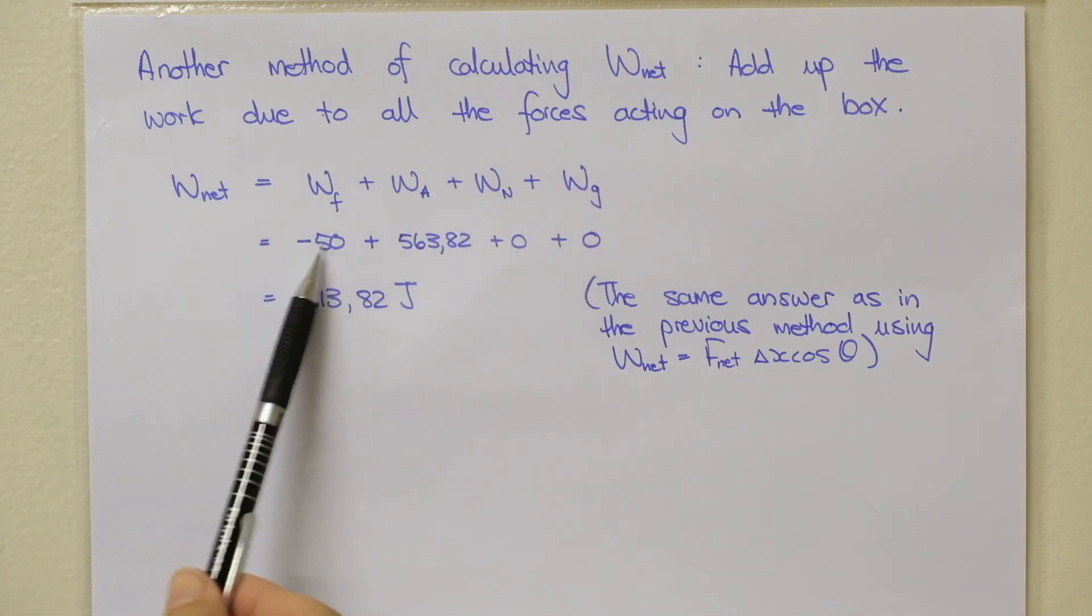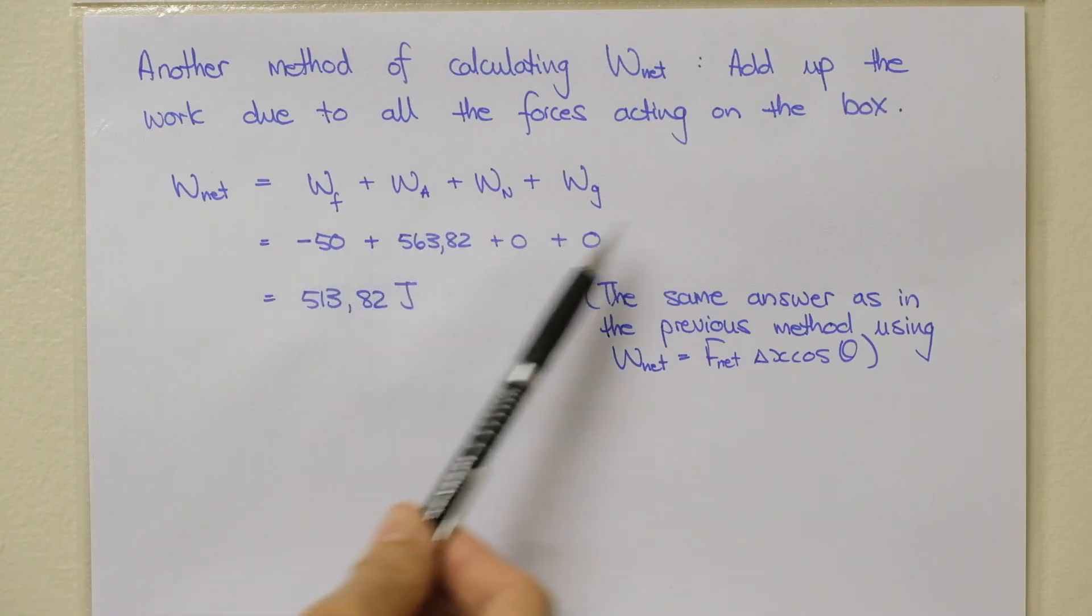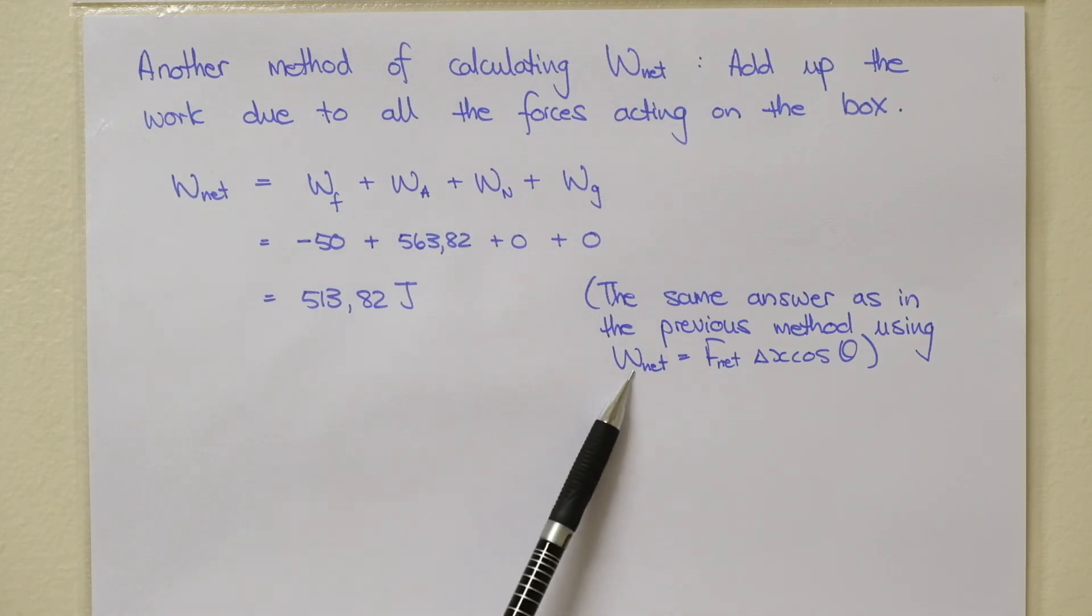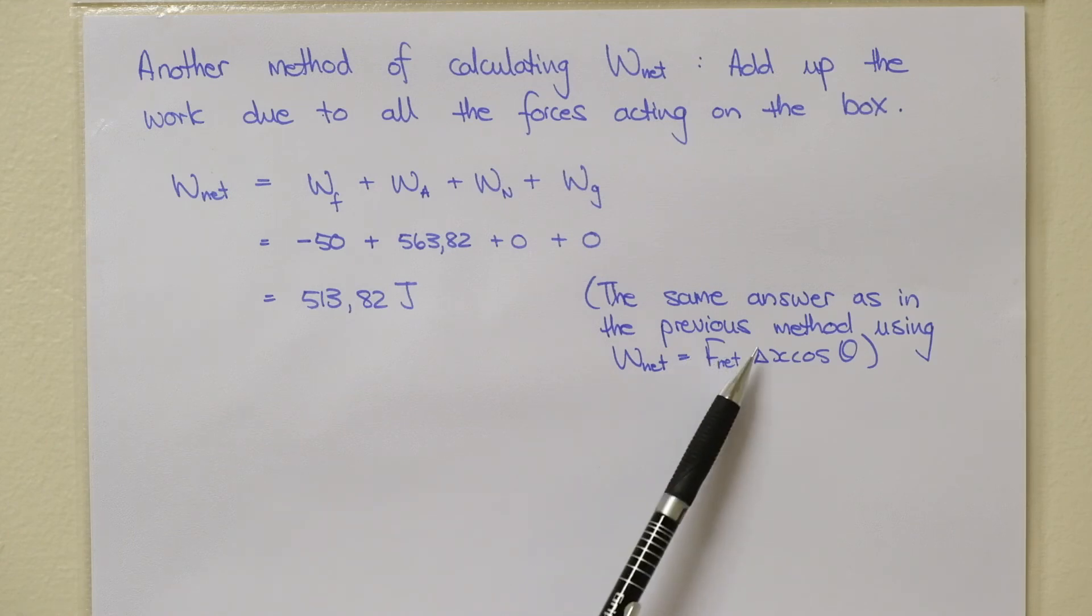So W net is the sum of all these works. We have worked out all of them in the previous questions. So if you just add all of them up, remember work due to a normal force and your gravitational force is 0 because those forces are 90 degrees to the displacement direction. And you end up with exactly the same answer as your previous method using the W net equals F net delta x cos theta equation.